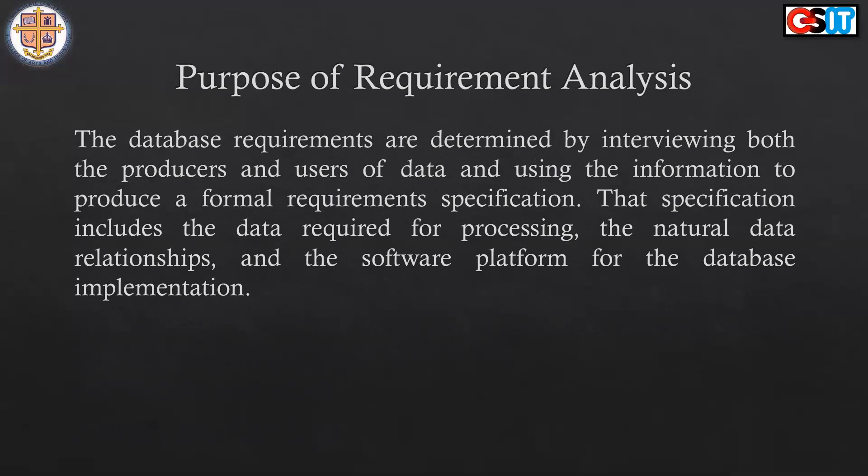Specification includes the data required for processing, the natural relationships, and the software platform for the database. When we define the database specification, we know we have an RDBMS or Relational Database Management System. If you are making the database, the reason you put information or data is because you see this information as somewhat related to the process you're doing — you wouldn't add information that isn't needed. You need to define and identify an organization's business objects.